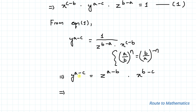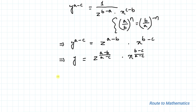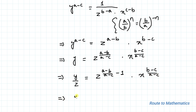In the next step we take the (a minus c) power to the right-hand side. So this becomes: y equals z to the power (a minus b)/(a minus c), multiplied with x to the power (b minus c)/(a minus c). Now dividing z on both sides of the equation, we have: y/z equals z to the power [(a minus b)/(a minus c) minus 1], multiplied with x to the power (b minus c)/(a minus c). This simplifies to y/z equals z to the power (c minus b)/(a minus c), and further to y/z equals x to the power (b minus c)/(a minus c).